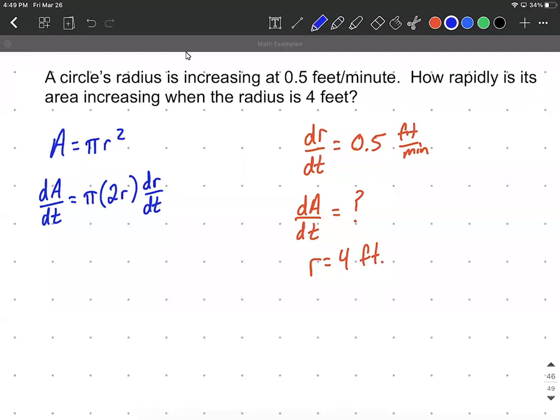Now that we've taken the derivative, we want to calculate dA/dt, so I'll leave that on the left-hand side by itself. Then we have π times 2 times, for the radius, we're going to plug in 4 feet.